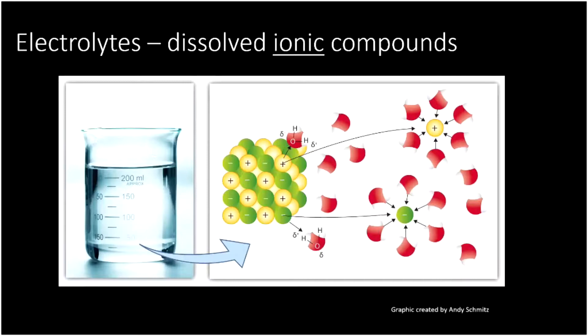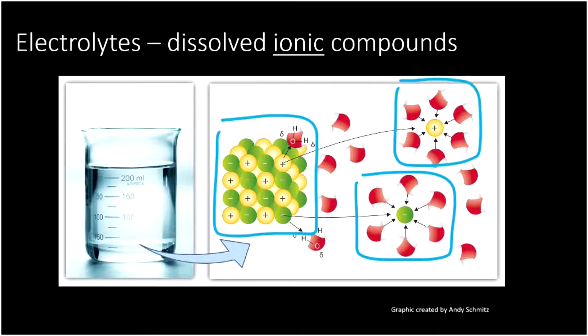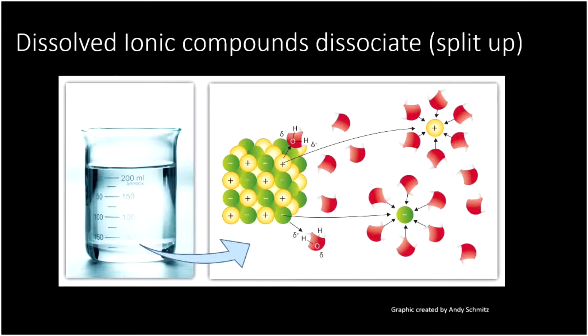It turns out that electrolytes are dissolved ionic compounds. Remember that ionic compounds contain a metal and a non-metal. And here we see a big old chunk of ionic compound. In the green, we have our negatively charged anion. And in the yellow, we have our positively charged cation. And what happens in the water is water comes along and grabs these ions and splits them up. So here we see a negatively charged ion. And here we see a positively charged ion. This splitting up has a special name. Dissolved ionic compounds dissociate. And that's important for understanding why electrolytes work.